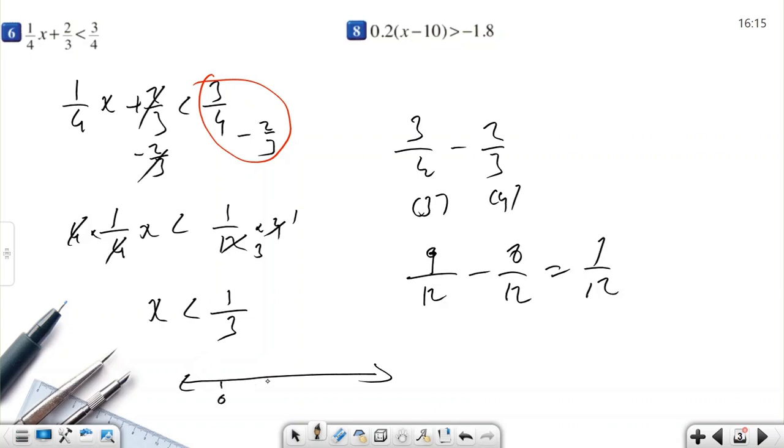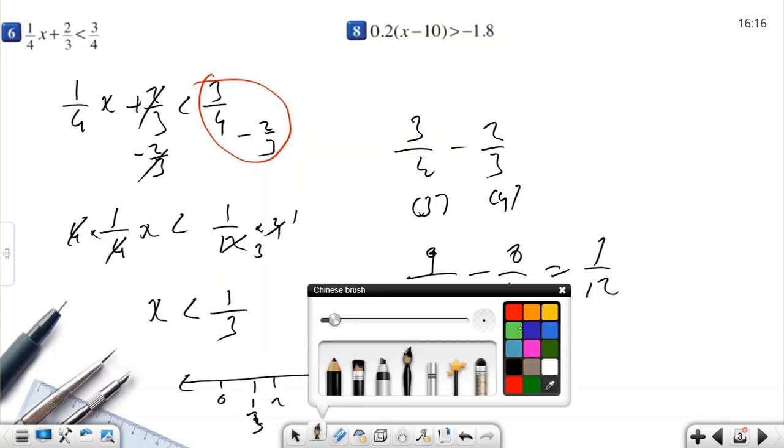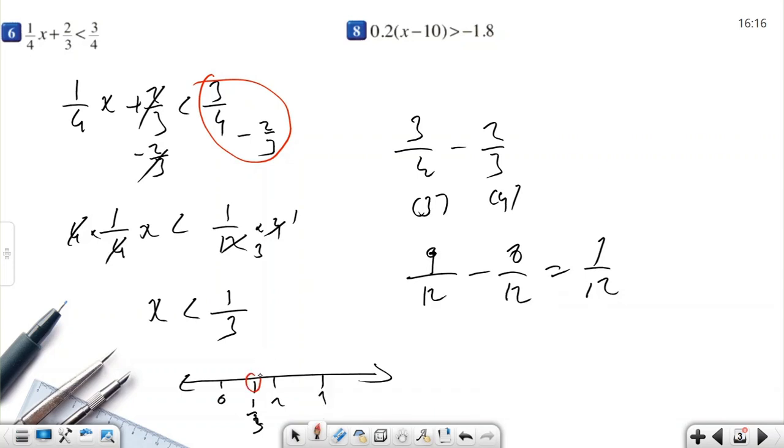So 0, 1, 2. So 1 over 3 is nearest here. 1 over 3. And 1 over 3 is not included in the solution. Empty circle and less than. 0 is less than 1 over 3. So the left side is our solution set.